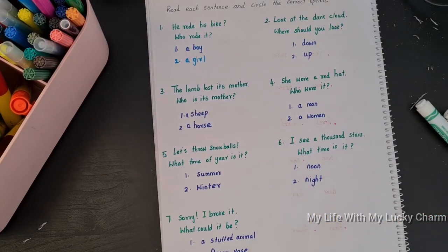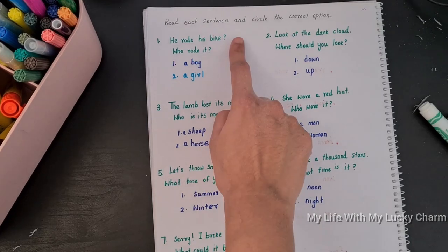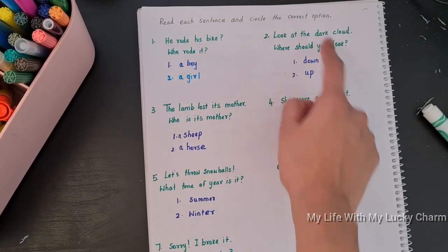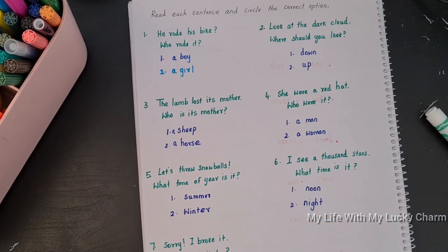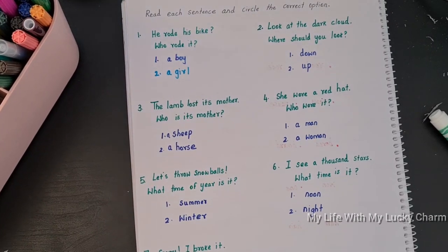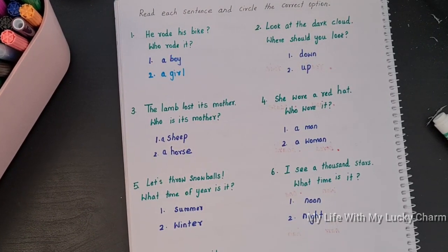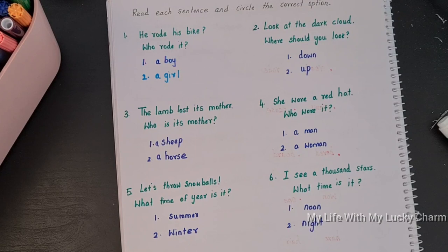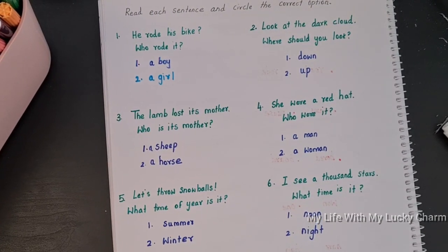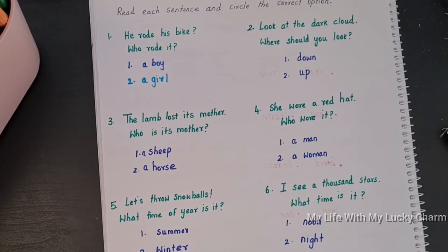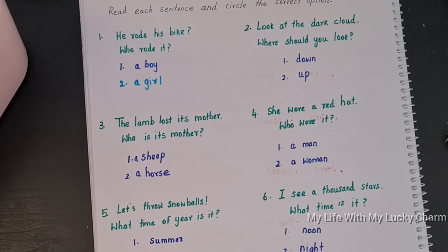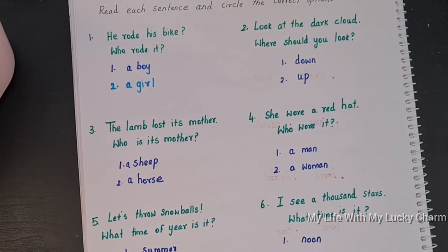So our next activity is read each sentence and circle the correct option. Again, this activity too will support them when we are going to work on comprehension in the future. Actually, slowly I'm just thinking to introduce a reading comprehension for Arrow.